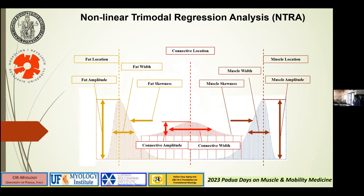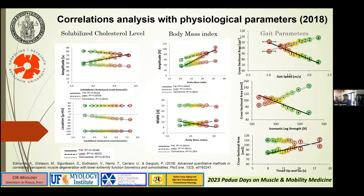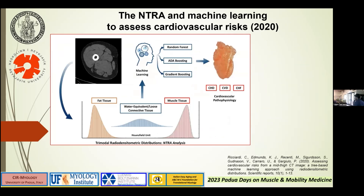The 11 NT-array features were extracted from the radiodensitometric profiles: for fat tissue — amplitude, location, width, and skewness; for connective tissue — location, amplitude, and width; for muscle — skewness, width, location, and amplitude. These 11 NT-array features were then correlated with physiological parameters such as gait, BMI, and solubilized cholesterol level. The level of correlation between our NT-array and physiological parameters was always greater than 0.9.